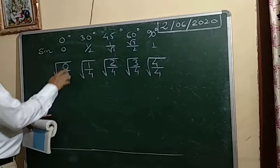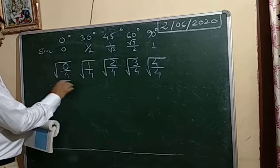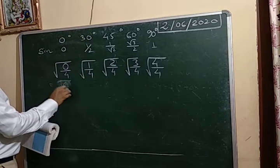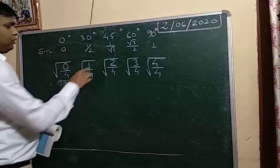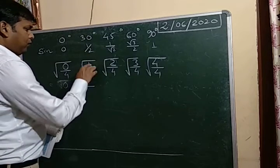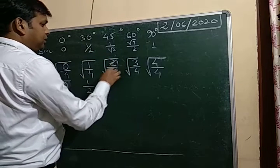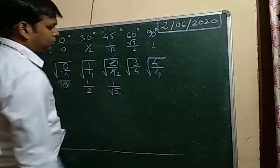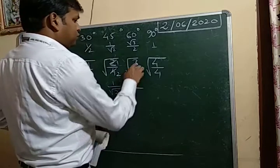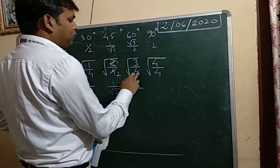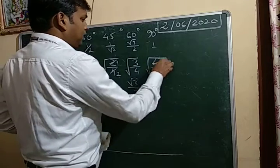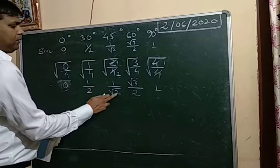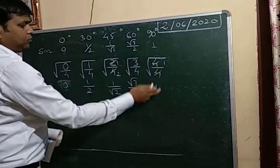And then take the square root. Now see: square root of 0 by 4 is 0. Square root of 1 by 4 — square root of 1 is 1, square root of 4 is 2, so it is 1 by 2. Square root of 2 by 4 — it is not a perfect square number, so it remains 1 by root 2. Square root of 3 by 4 is root 3 by 2. And square root of 4 by 4 — square root of 4 is 2, which cancels to give 1. So the sine values are: 0, 1/2, 1/√2, √3/2, and 1.